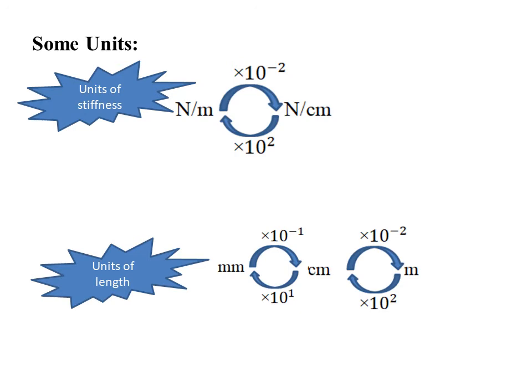In case of converting from newton per meter to newton per centimeter, divide by 100, and vice versa multiply by 100. Unit of length: millimeter, centimeter, meter, etc.